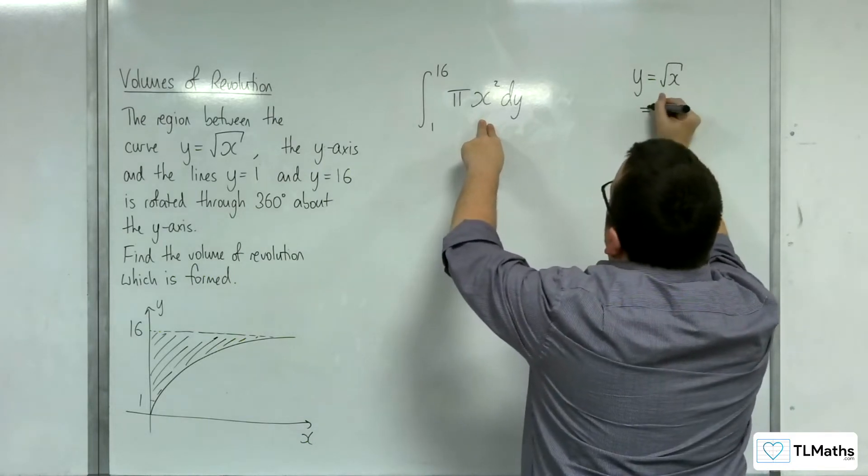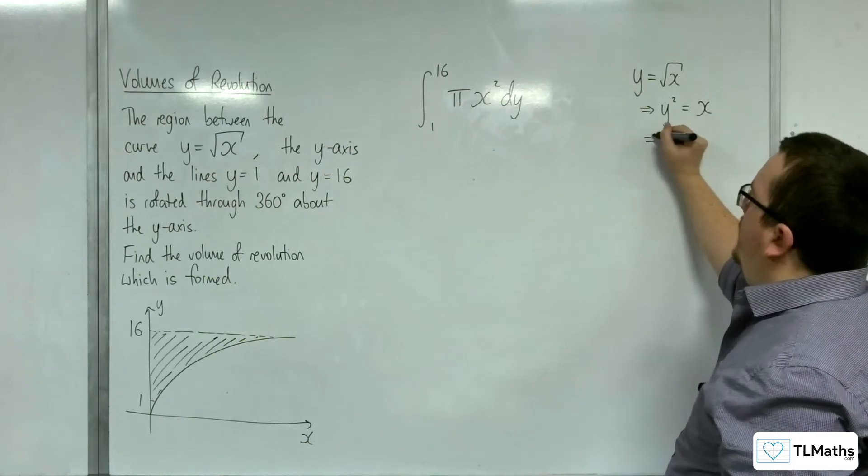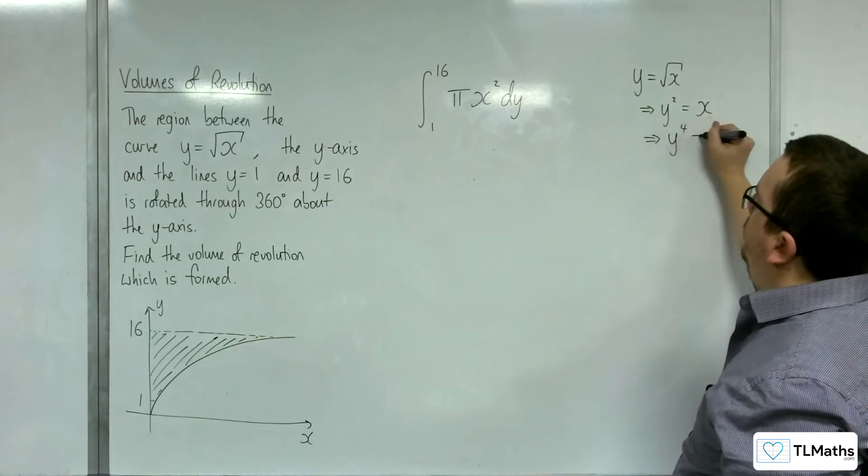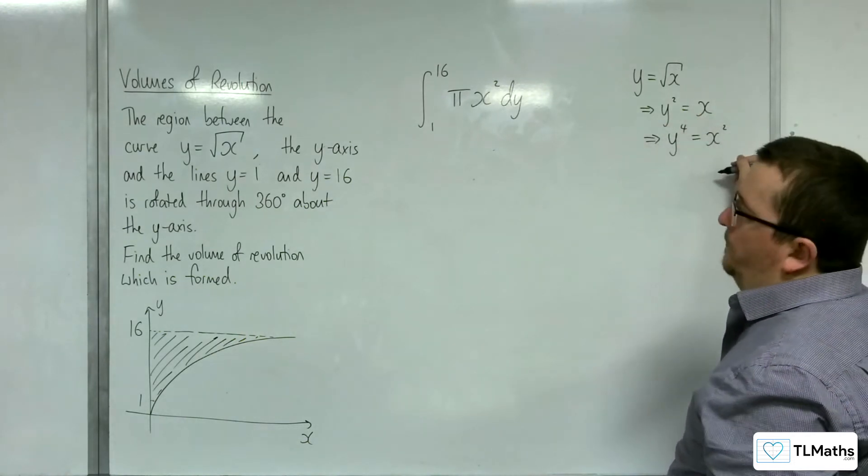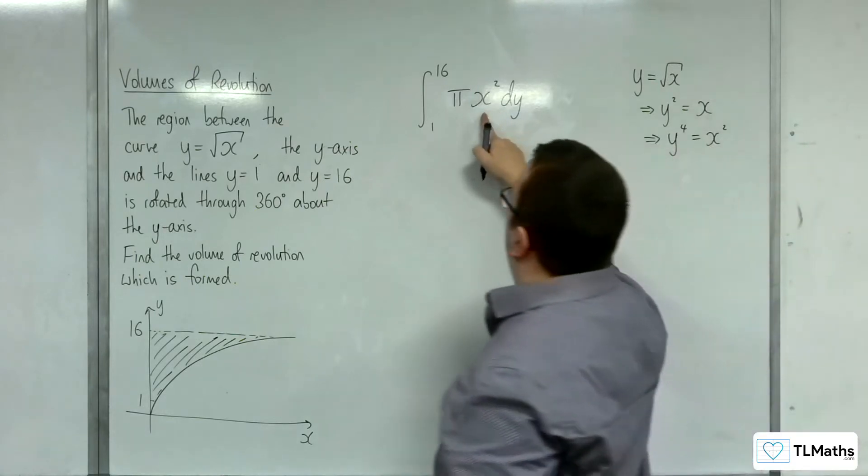y squared will be equal to x, and if I square both sides again, y to the 4 will be equal to x squared. So, I can substitute y to the power of 4 in for the x squared.